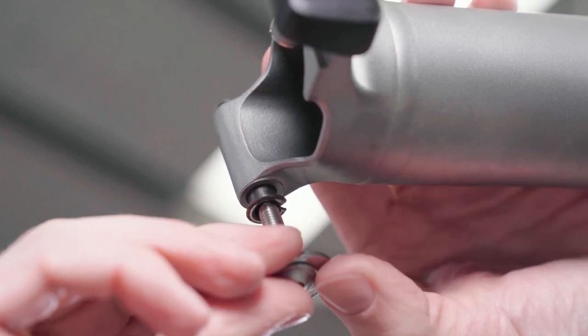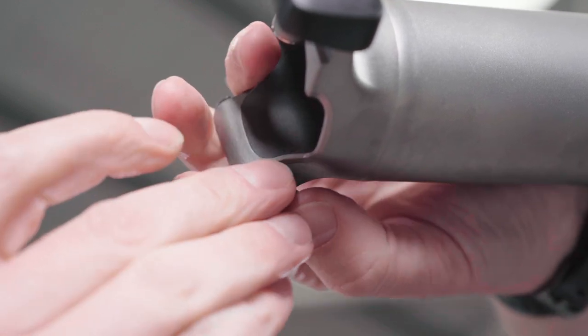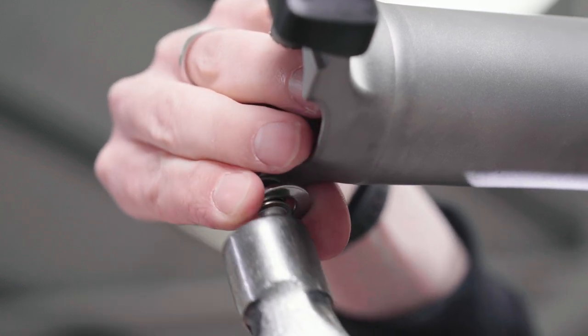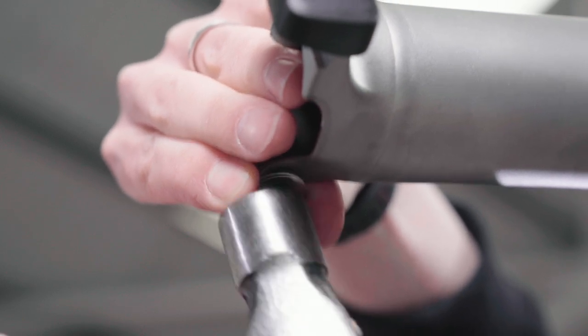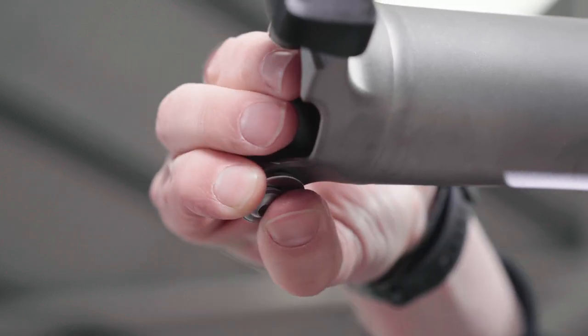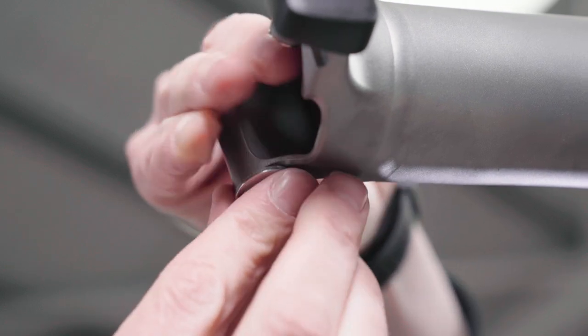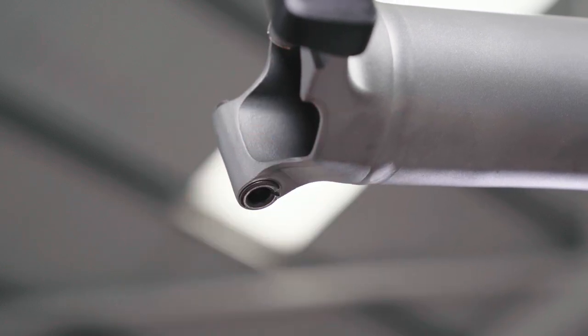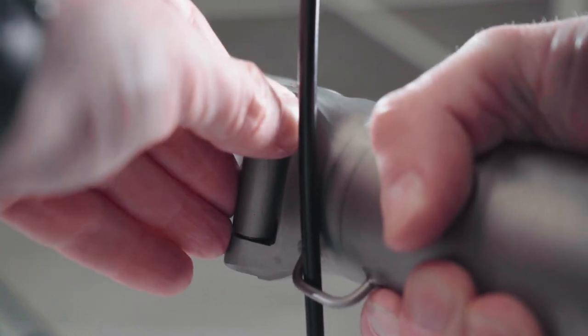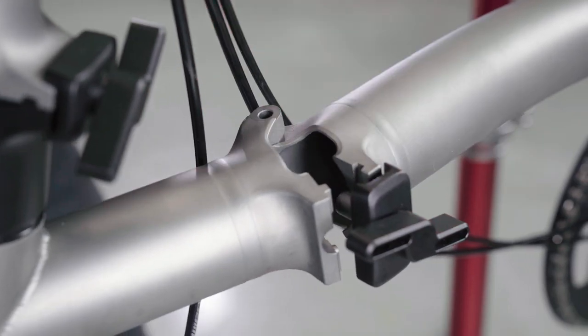We used an M5 bolt and a washer as our press. Align the two parts of the frame together before inserting the main frame hinge spindle through the spindle hinge hole.